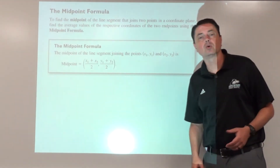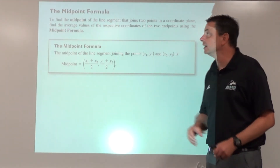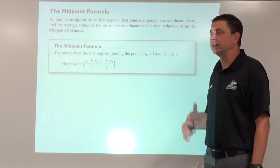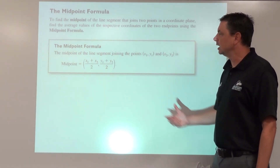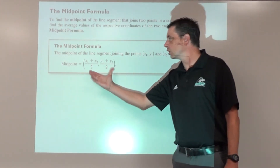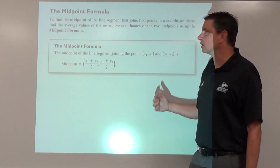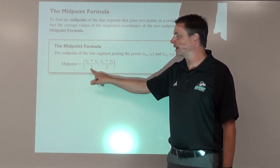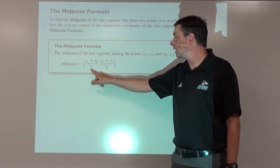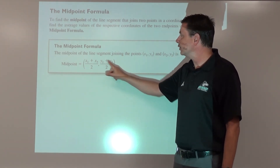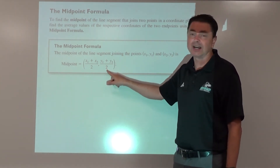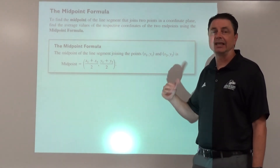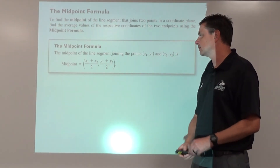The next thing we're going to look at in the coordinate plane is the midpoint formula, to find the midpoint of a segment. The formula is really just averaging the coordinates: add the two x coordinates together and divide by two, then add the two y coordinates together and divide by two. We're just finding the average of the x's and the average of the y's.